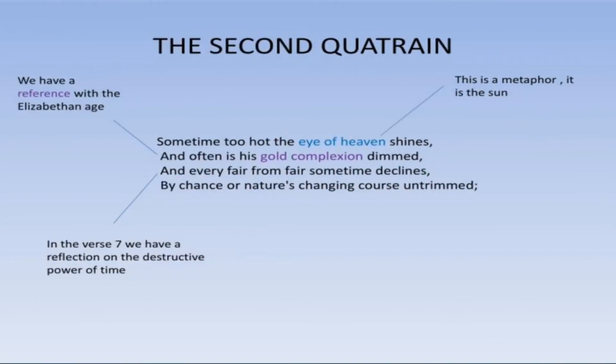The next quatrain: Sometimes too hot the eye of heaven shines, And often is his gold complexion dimmed, And every fair from fair sometimes declines, By chance or nature's changing course untrimmed. In these lines, the poet mentions summer's days. He says that in summer the days are very hot and the sun shines very brightly during the daytime. And often it is seen that the golden rays of the sun are blocked by clouds. Where there are clouds in the sky, the rays of the sun are blocked and the brightness of the sun is faded by the clouds.